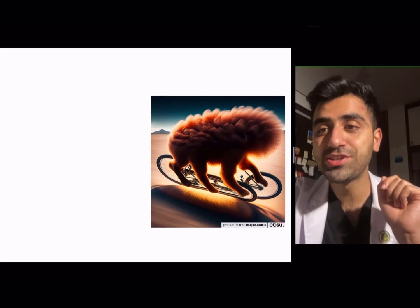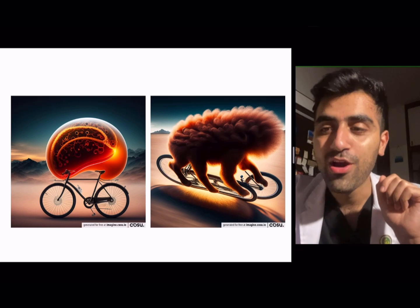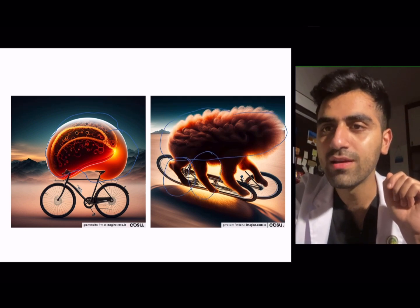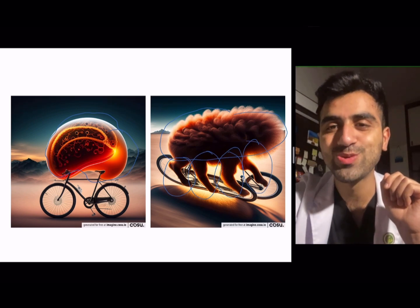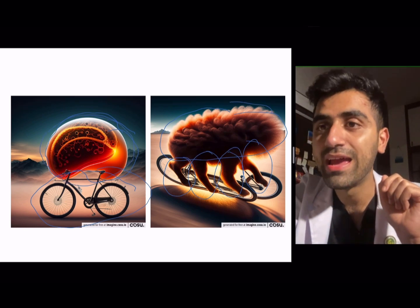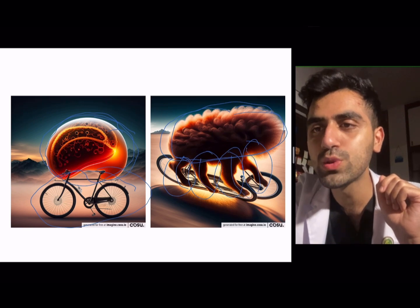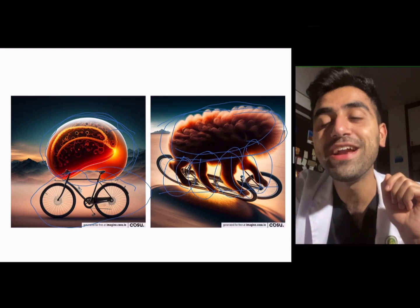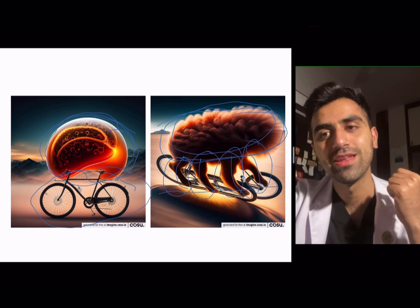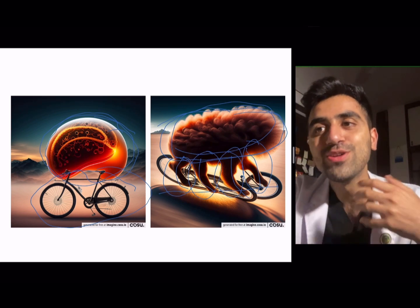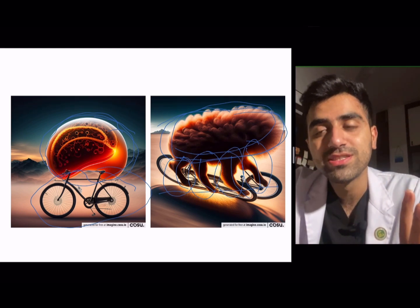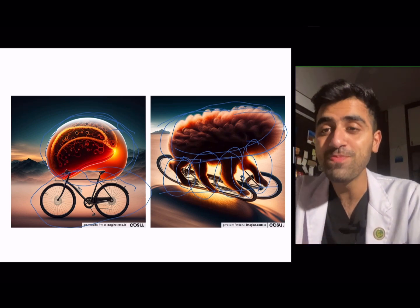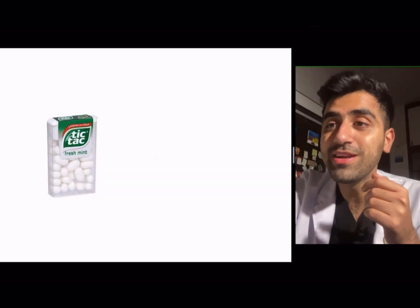To remember cyclosporine's side effects, picture a hairy kidney with tooth-like projections riding a bicycle. The hairy kidney = hirsutism, the tooth-like projections = gingival hyperplasia, the kidney riding = nephrotoxicity, and cycling activates the sympathetic system giving you increased pressure = hypertension. All four side effects in one image.